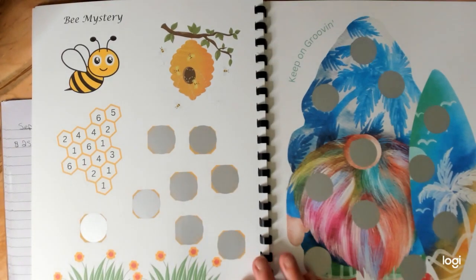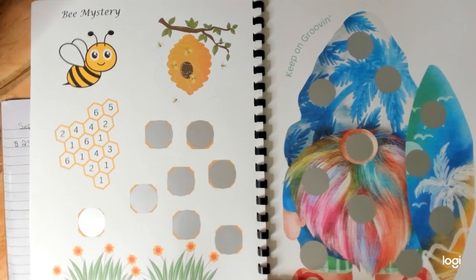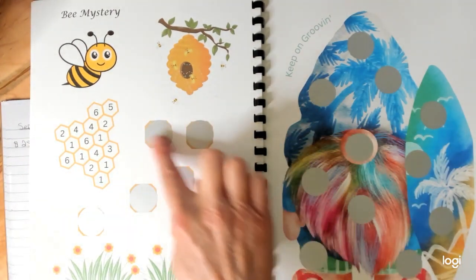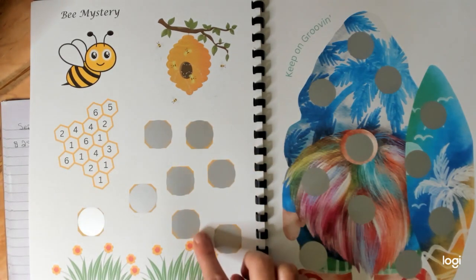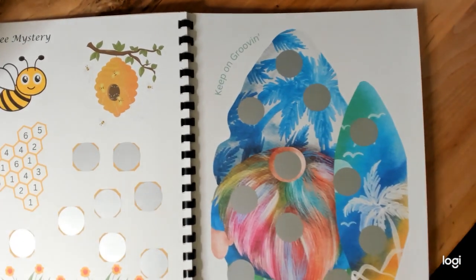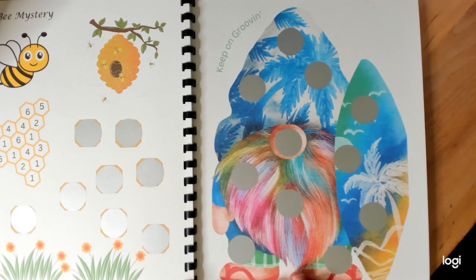And then over here, y'all know I love my bees. This is a little bee mystery. Don't stress out with these. They're low number also. Same as let's keep grooving. Y'all know I love my gnomes.